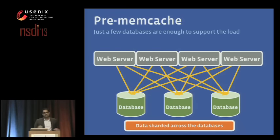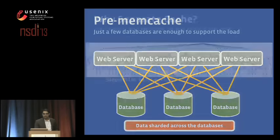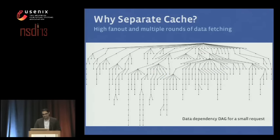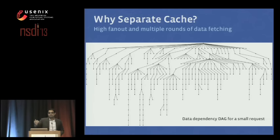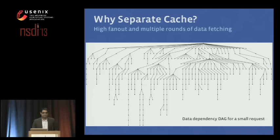Before memcached, we had a bunch of web servers and databases, with data sharded across databases based on user ID. Just a few databases were enough to support the load. So why did we even need memcached? This diagram is actually the data dependency DAG for a small user request — not one of your major ones. Each point represents a unit of data fetch and compute needed to render the page. Even in this small example, there are 20 rounds of data fetching at minimum, and you can quickly see how a database alone is not sufficient.